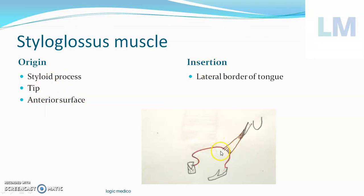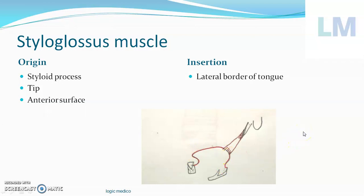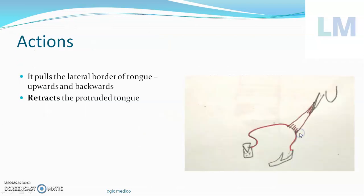The insertion, as you can see, is the lateral border of the tongue — specifically at the junction between the oral part of the tongue and the pharyngeal part of the tongue. The oral part is the anterior two-thirds of the tongue, and the pharyngeal part is the posterior one-third. The muscle is attached at that junction area.